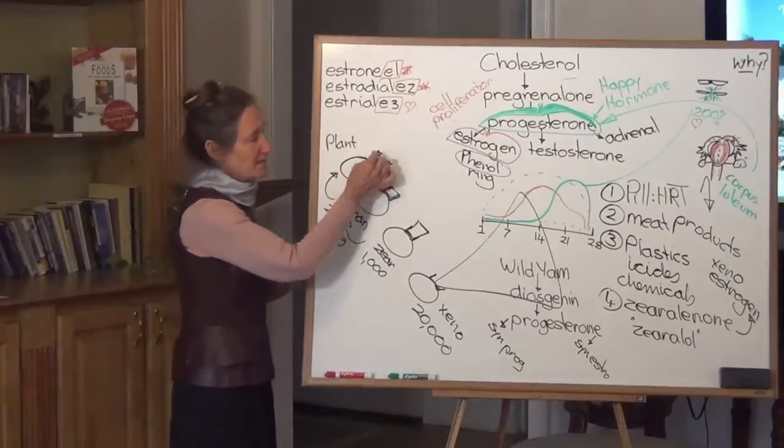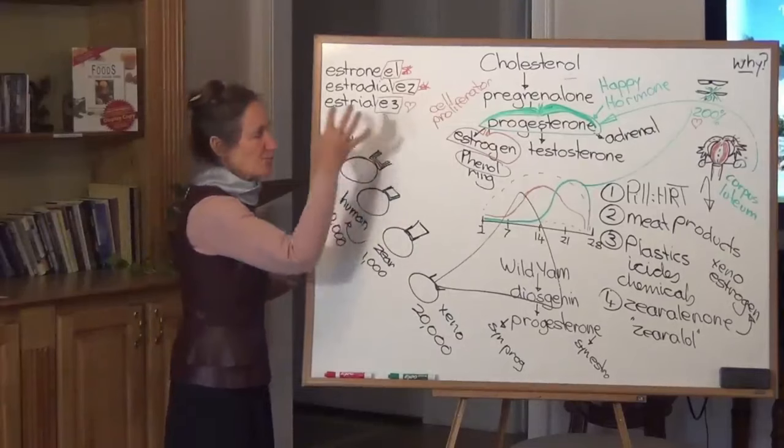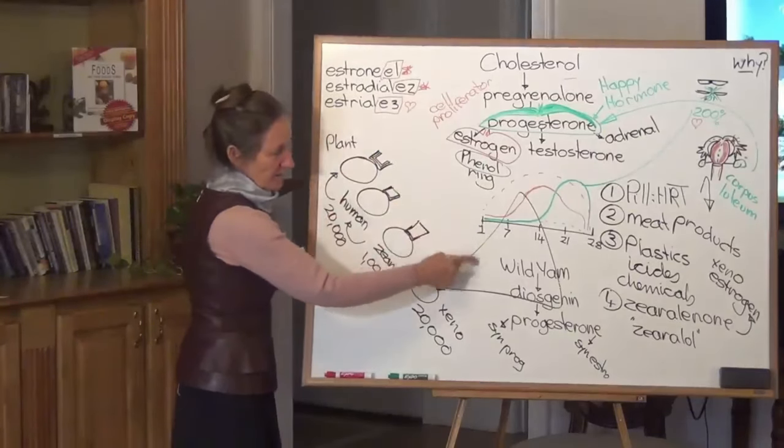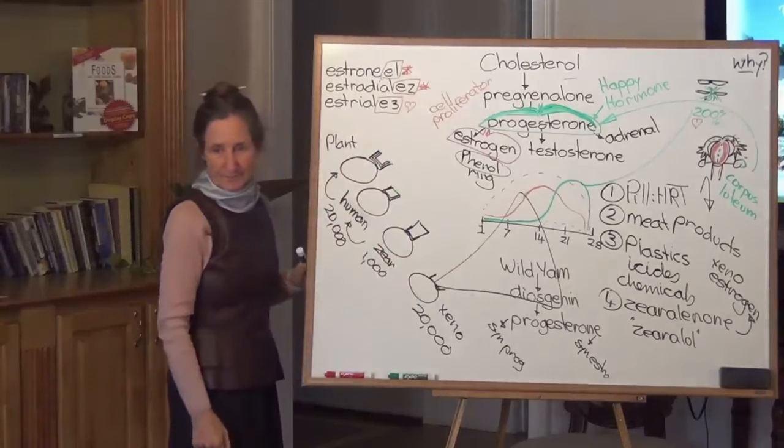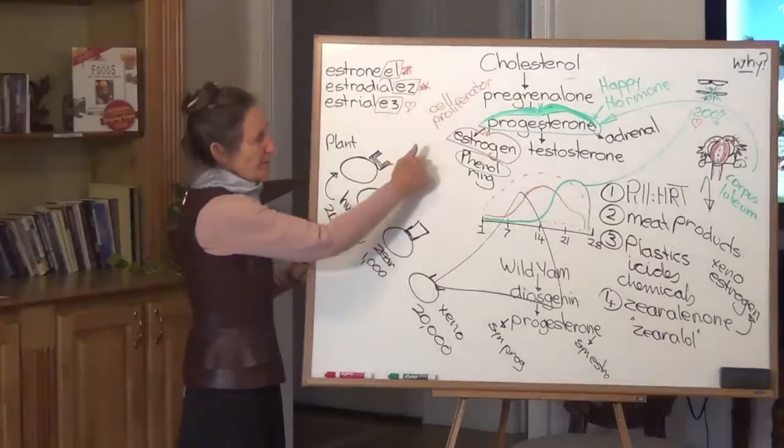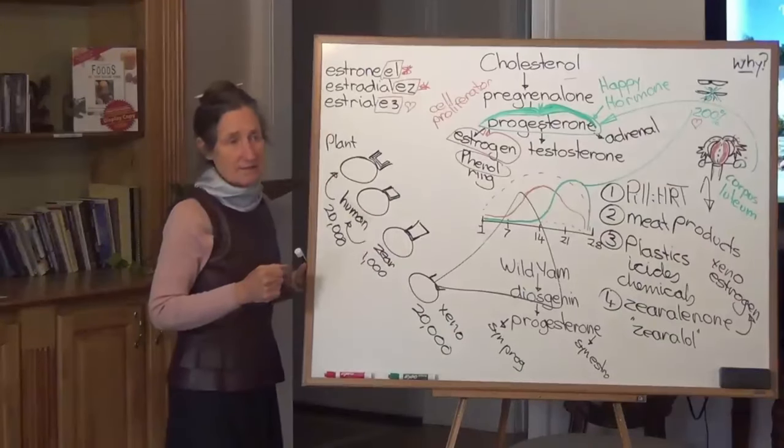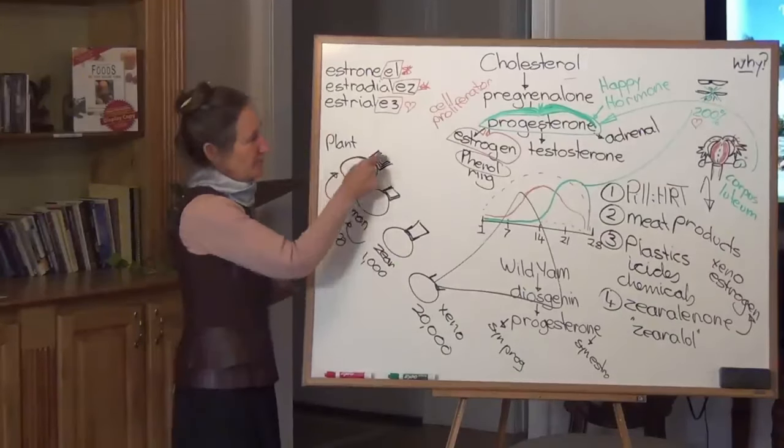And this plant estrogen, because it's a plant, it comes to the receptor site and it knocks. Excuse me, can I come in? And the cell says, no, we've got enough. So you know what the plant estrogen does? Sits in the receptor site, protecting that receptor site from these two guys who are the nasties.